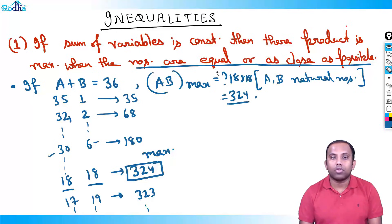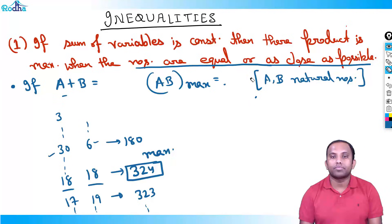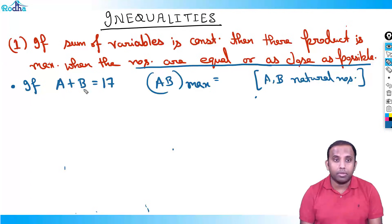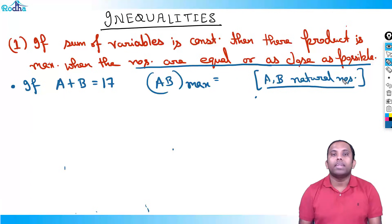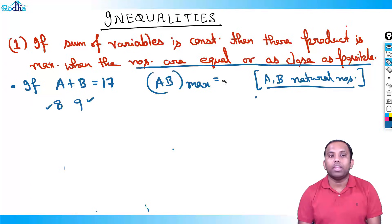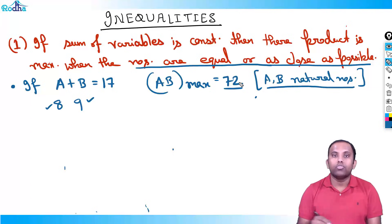Suppose a plus b equals 17 and a and b are natural numbers. What is the maximum value of a into b? Since 17 is odd, a and b cannot be equal. We take the closest possible values: 17 divided by 2 is 8.5, so the two natural numbers around 8.5 are 8 and 9. Therefore, the maximum value of a into b is 8 into 9, which is 72. This rule is true for any number of variables.